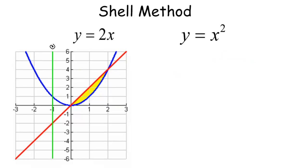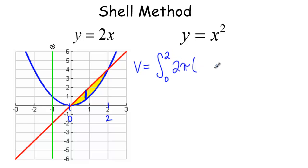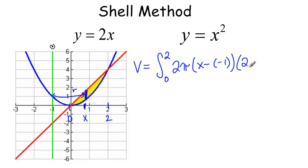Now let's do the same region using the shell method. We cut parallel to the axis, giving vertical rectangles. Volume equals the integral from 0 to 2 of 2π times the radius. The radius is the distance from the slice at x to the axis at negative one, so x minus negative one. Times the height of the rectangle, which is top minus bottom: 2x minus x squared, dx.